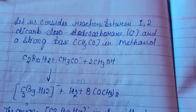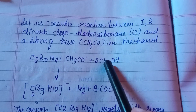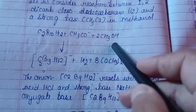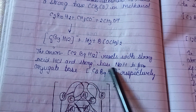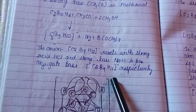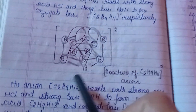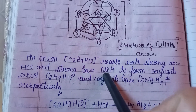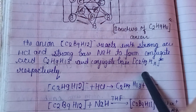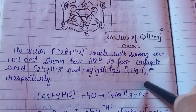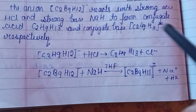Let's consider the reaction between 1,2-dichloro-o-carborane and a strong base in methanol. The anion reacts with a strong acid HCl and a strong base to form a conjugate acid and conjugate base respectively. So from this we can prepare conjugate acid as well as conjugate base — this reaction is for the acid and this one is for the base.